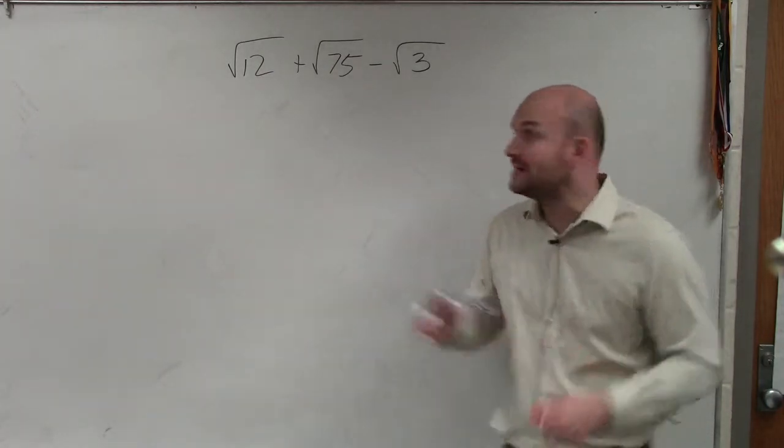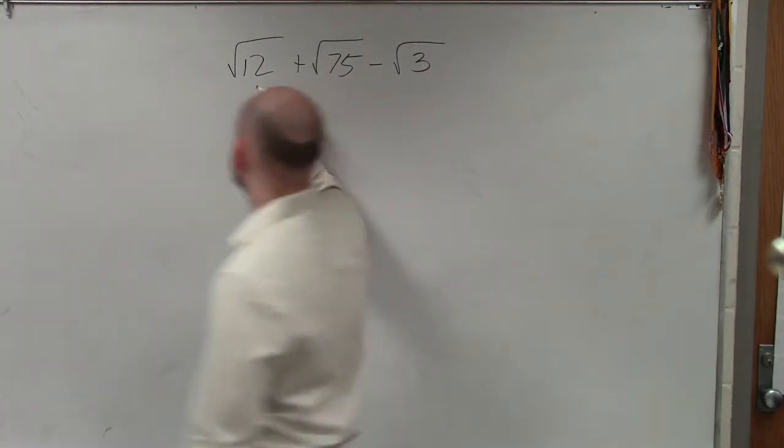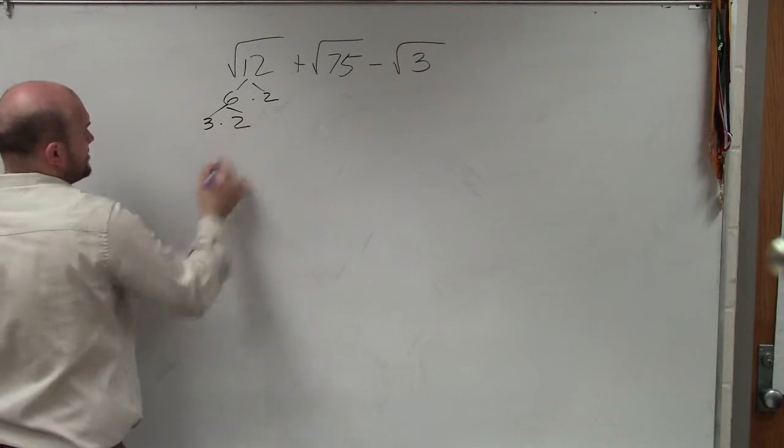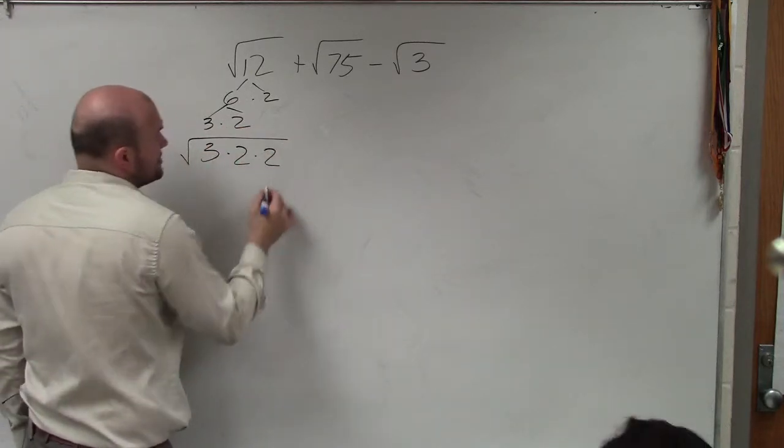I'll do this actually two different ways. We can break this down into factors. If I was going to use my factor tree, I could say 6 times 2 and then 3 times 2. So the square root of 12 is 3 times 2 times 2.